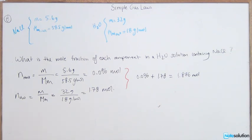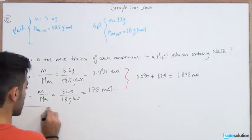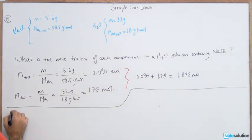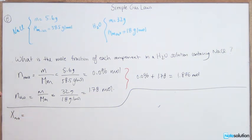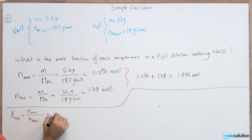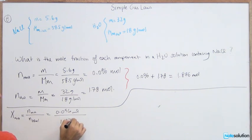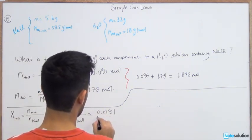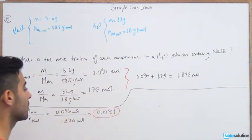Once you know the total number of moles, we can start doing the mole fraction. The mole fraction is represented by x. So x of NaCl equals the number of moles of NaCl over the total number of moles: 0.096 moles over 1.876 moles, which gives you 0.051.